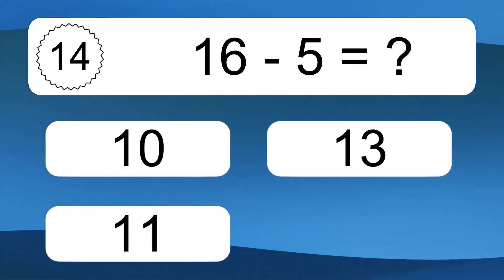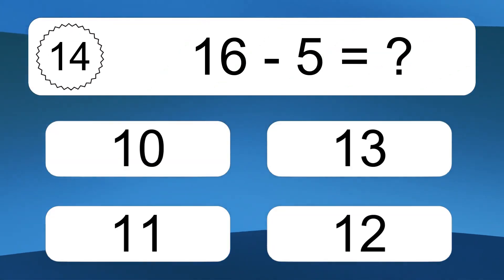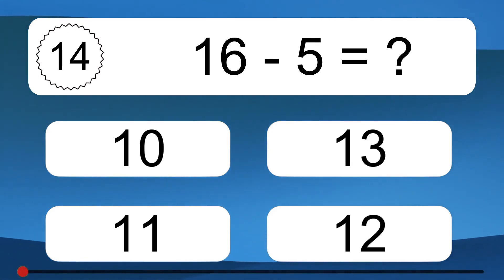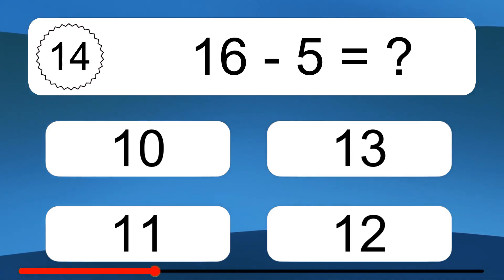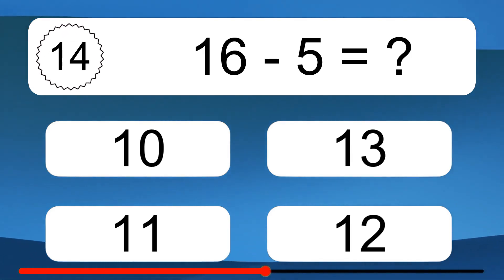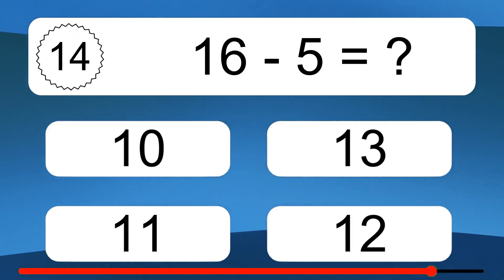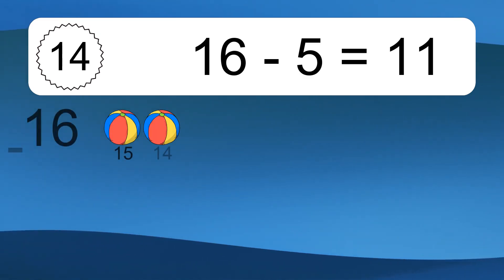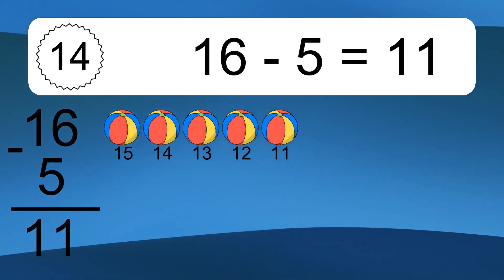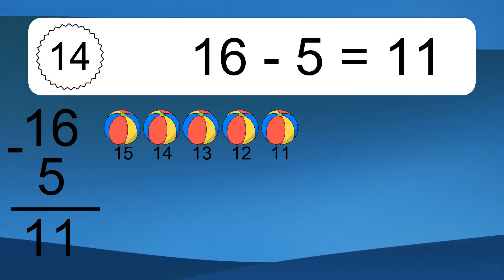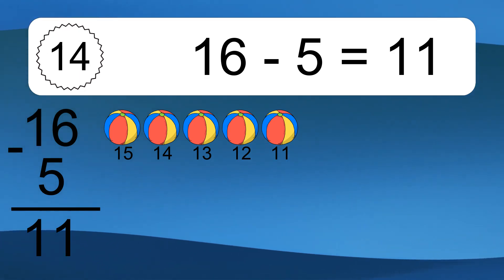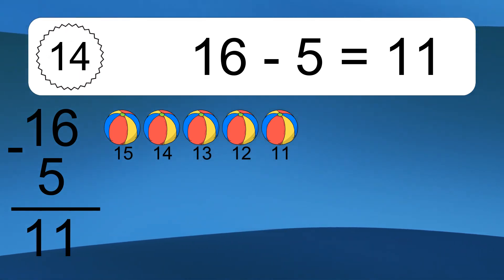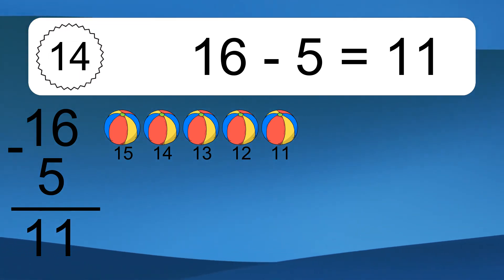16 minus 5 equals what? 16 minus 5 equals 11. Let's count it: 15, 14, 13, 12, 11.